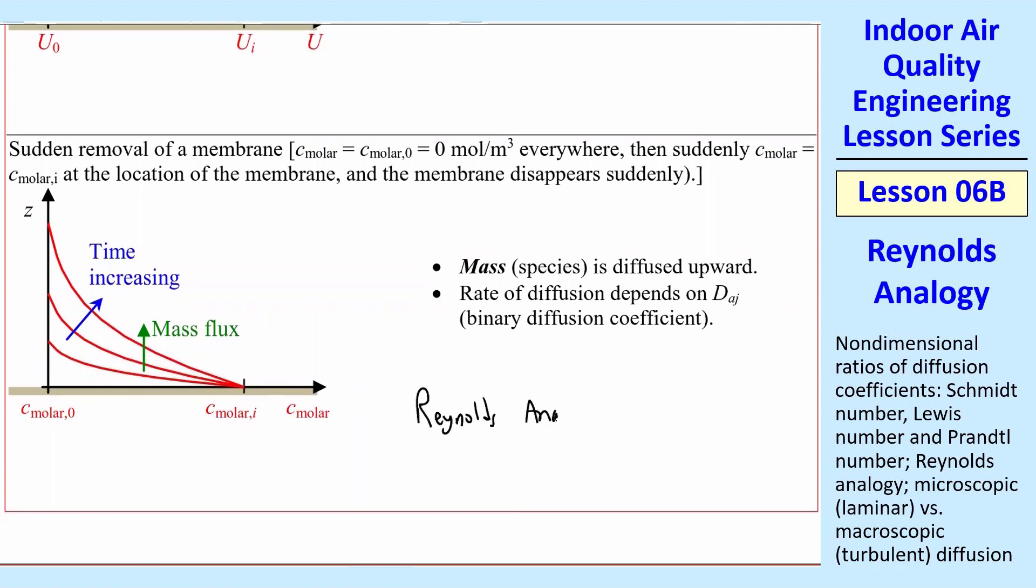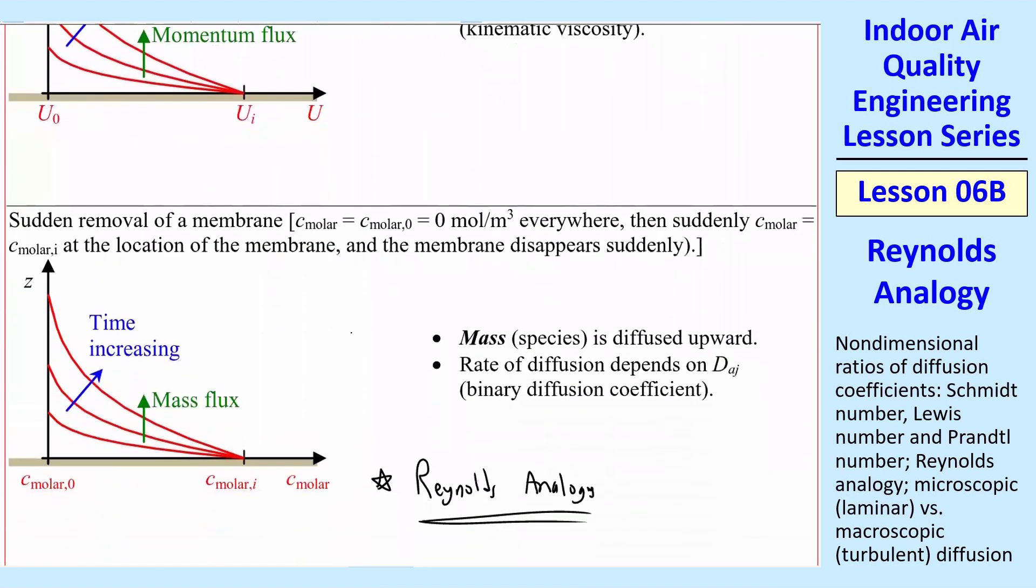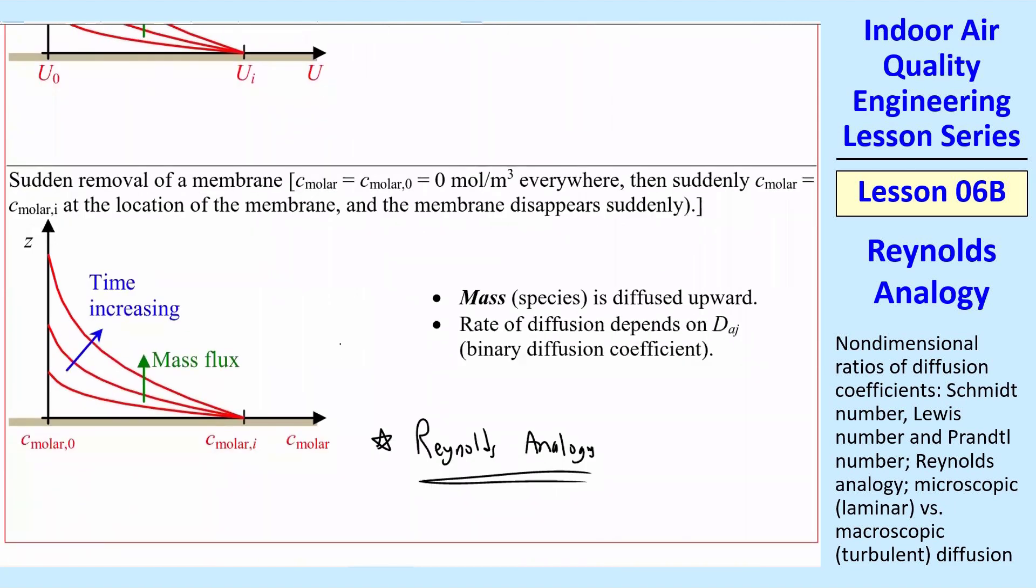And so this Reynolds analogy is very useful because we can do experiments with heat transfer, which is the easiest thing to measure, because you could just put thermocouples everywhere. And we can apply them to momentum, and we can apply them to mass. And so that's why sometimes, when you look into the literature with species diffusion, you'll see things like Prandtl numbers in there. And Nusselt numbers. These are all heat transfer kind of things, but they work also with species diffusion because of the Reynolds analogy.